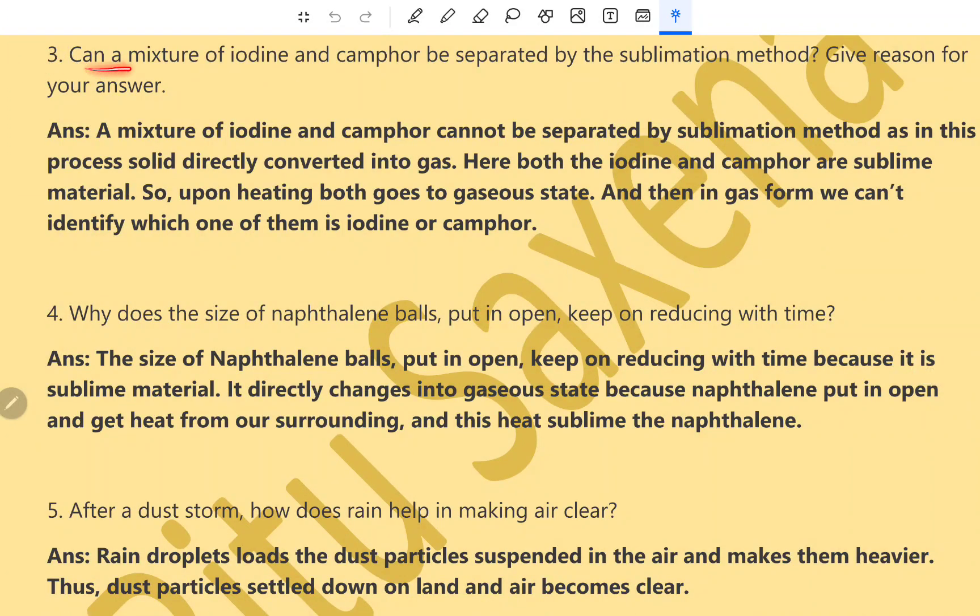Question number 3. Can a mixture of iodine and camphor be separated by the sublimation method? Give reason for your answer. A mixture of iodine and camphor cannot be separated by sublimation method as in this process, solid directly converts into gases form. Here, both the iodine and camphor are sublime materials. So, upon heating, both goes to the gaseous state. And then in gas form, we cannot identify which one of them is iodine or camphor. So, we cannot separate iodine and camphor by sublimation method.